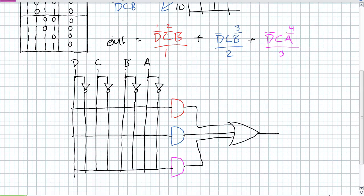Okay, here is a one-line diagram showing this. I've got our red AND gate — it's getting not-D ANDed with not-C ANDed with B. Our blue AND gate is getting not-D ANDed with C ANDed with not-B. Finally, our pink AND gate is getting not-D ANDed with C ANDed with not-A.